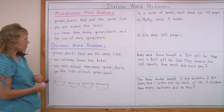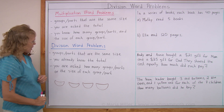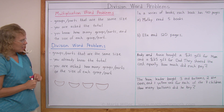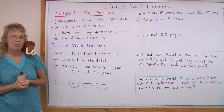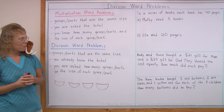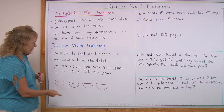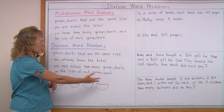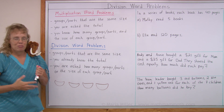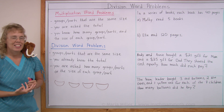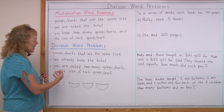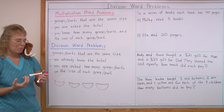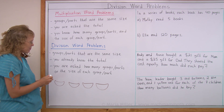Let me show you an example with some baskets here. If I were to write a multiplication word problem, I would tell you, for example, that there are four baskets, and in each basket there is the same amount of something — maybe apples.